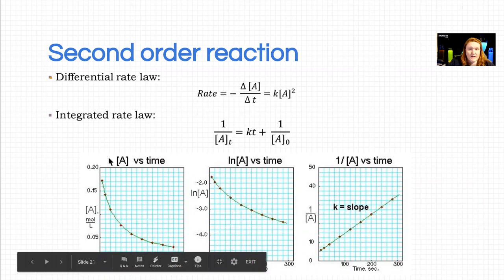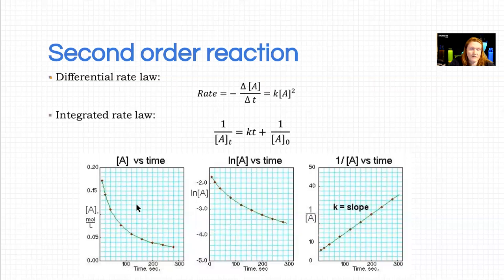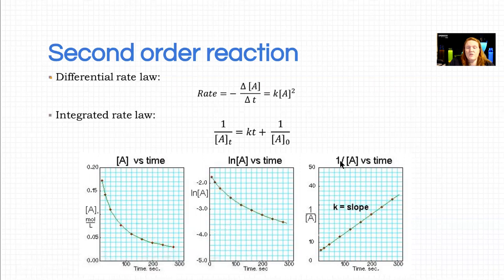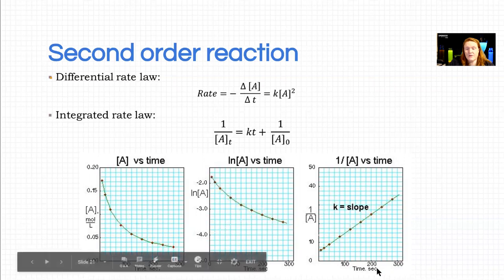When you plot data from a second order reaction on an A versus time scale, it's very exponential in decay, so that's not linear. LN of A versus time leads to another exponential curve, but when you do the inverse of A, one divided by A versus time, you end up with a linear relationship.